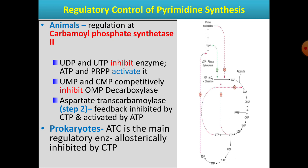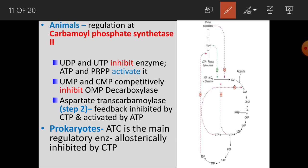In animals, regulation is primarily at CPS2. UDP and UTP — the end products — inhibit CPS2, whereas ATP and PRPP activate it. Additionally, UMP and CMP competitively inhibit OMP decarboxylase — the step where carbon dioxide is released — thus providing feedback inhibition at that step as well.